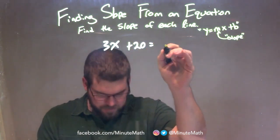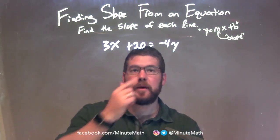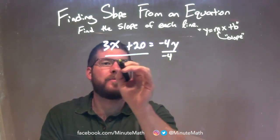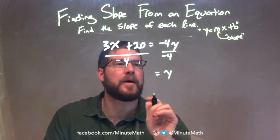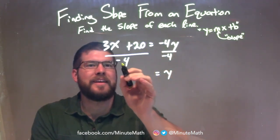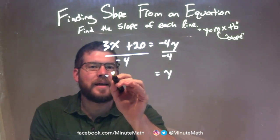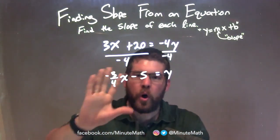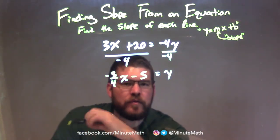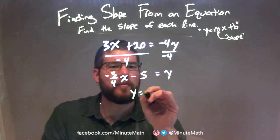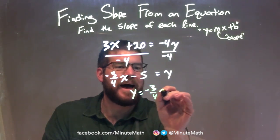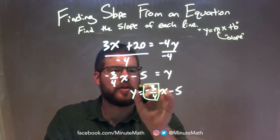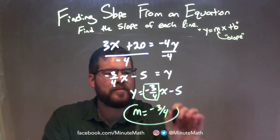3x plus 20 equals negative 4y. We want to isolate y, and it's pretty much almost there. If I divide both sides by negative 4, y is isolated on the right. I need to distribute the negative 4 to both parts: 3x divided by negative 4 is negative 3 fourths x, and 20 divided by negative 4 is negative 5. So negative 3 fourths x minus 5 equals y. If you need y written first, we can flip: y equals negative 3 fourths x minus 5. Now in slope-intercept form, y equals mx plus b. The m value isolated as the coefficient in front of x is negative 3 fourths. m equals negative 3 fourths. That is our final answer.